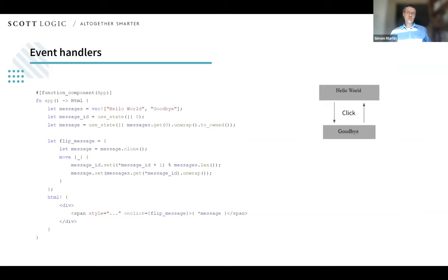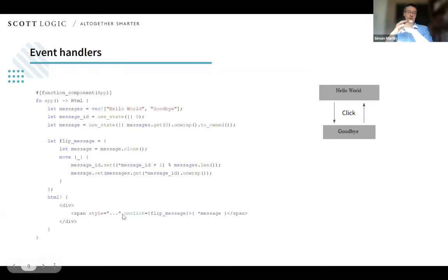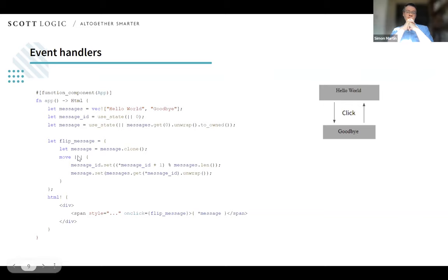A dynamic web page wouldn't be dynamic without event handlers — responsible for interactions such as keystrokes, mouse interactions, touch screen clicks, and drags. In Yew code this is handled cleanly. In the code on screen there's an onclick handler which fires a flip_message method. The span displaying the current message fires that method on click. The flip_message method increments and rotates the current message ID, constrained to the number of possible messages — in this case two — then sets the current message, automatically triggering a re-render of the page.